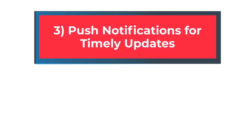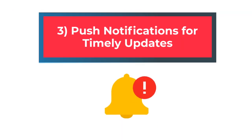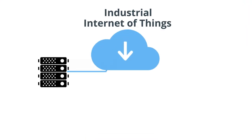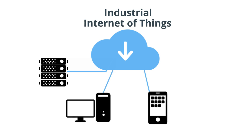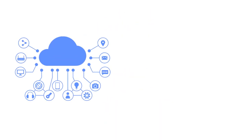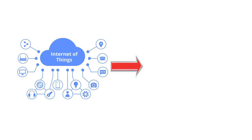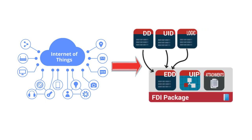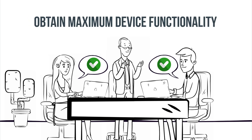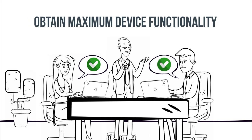Benefit 3: Push notifications for timely updates. The repository takes full advantage of the industrial Internet of Things to enable push notifications to connected host systems, for timely access to the latest EDD and FDI device packages. This allows host systems to use the latest device packages to obtain maximum device functionality.